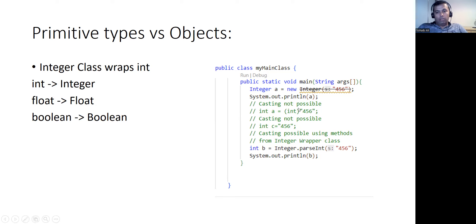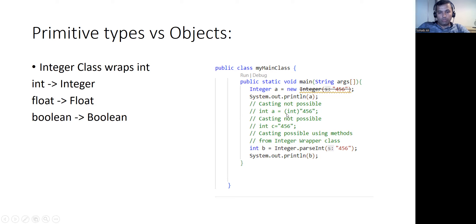A better way to initialize your integers is using the static method 'Integer.parseInt(someString)', which parses the string and gives you the value 456. You cannot type cast a string directly using the primitive int type — you should always use the managed Integer type for anything useful.